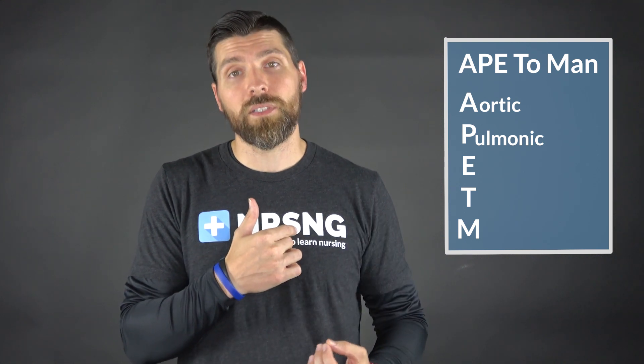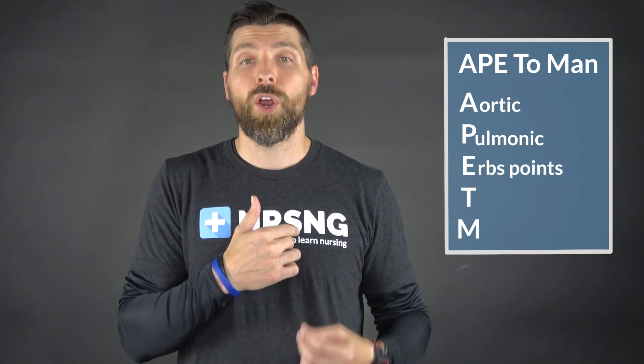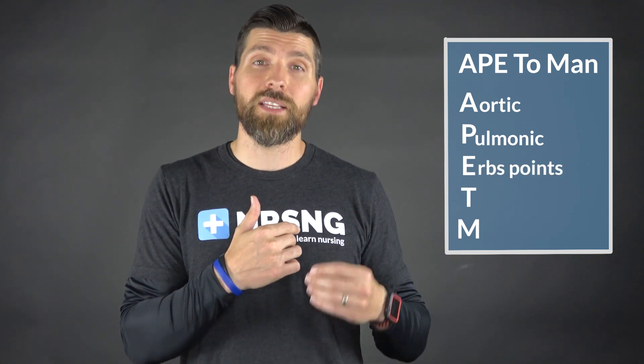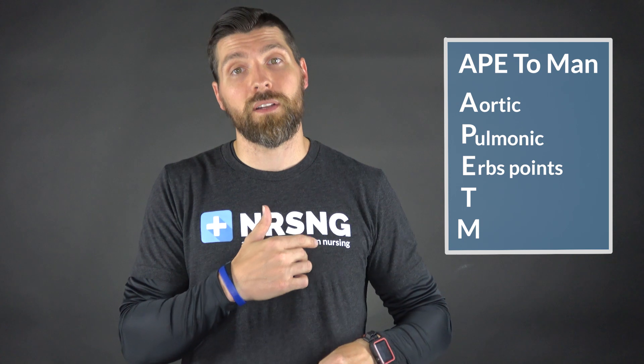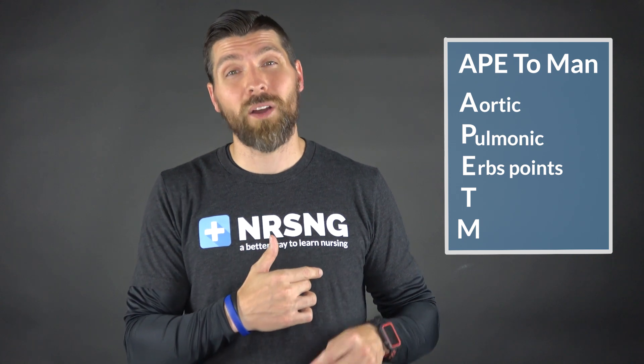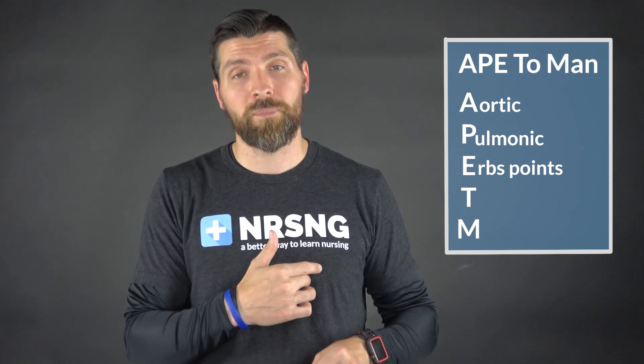Now the next thing we want to listen to is something called Erb's Point. Erb's Point is directly beneath the pulmonic auscultation location, and that's in the third intercostal space — so you move down one more.